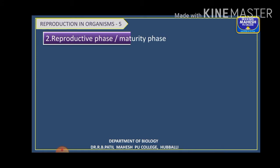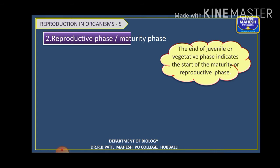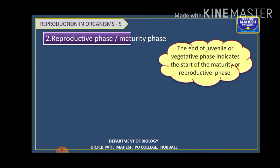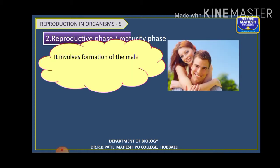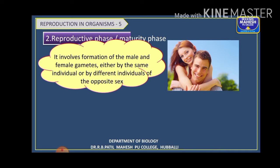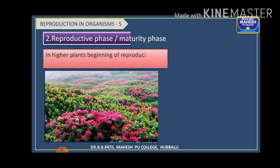The second phase is the reproductive phase or maturity phase. Here the organisms reproduce. It marks the end of the juvenile phase and the start of the maturity or reproductive phase of the organisms. During this phase, the formation of gametes takes place — either in the same individual or in two different individuals of opposite sexes. Gametes are formed and gamete fusion takes place, which is where reproduction starts.